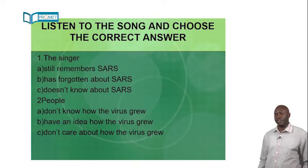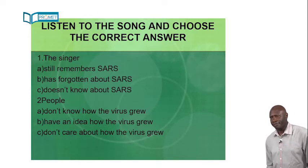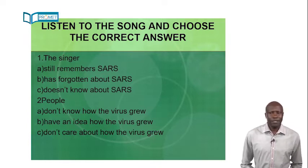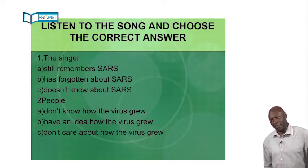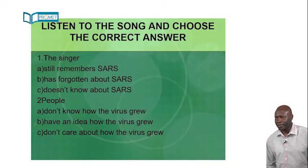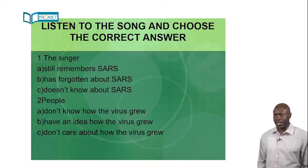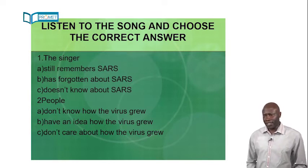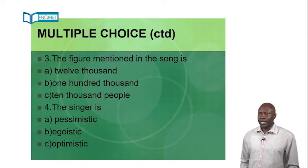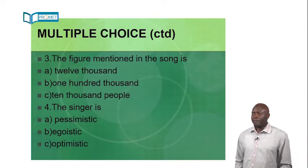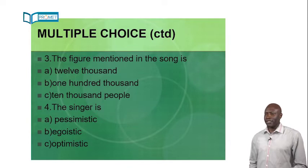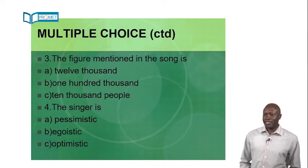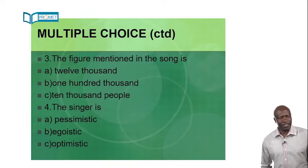This is the end of the song. Now let's look at your answers. The first one. The singer still remembers SARS, has forgotten about SARS, doesn't know about SARS. Yes, I was going to try with the first one. Yes, Omar. Yes, A, still remembers SARS. Yes, very good. That's it. The second one, Aminata. Yes, what is the right answer? B. Excellent. People have an idea how the virus grew. Next. The figure mentioned in the song is 12,000, 100,000, or 10,000 people. Right. Yes Omar. 10,000 people. Yes. Very good. The last one. The singer is pessimistic, egoistic, optimistic. What is the right answer here? Optimistic. Excellent.